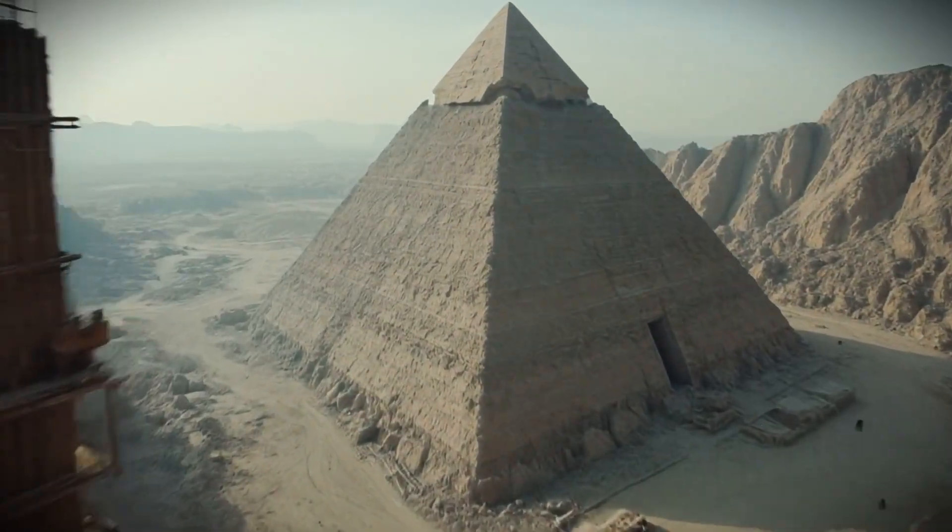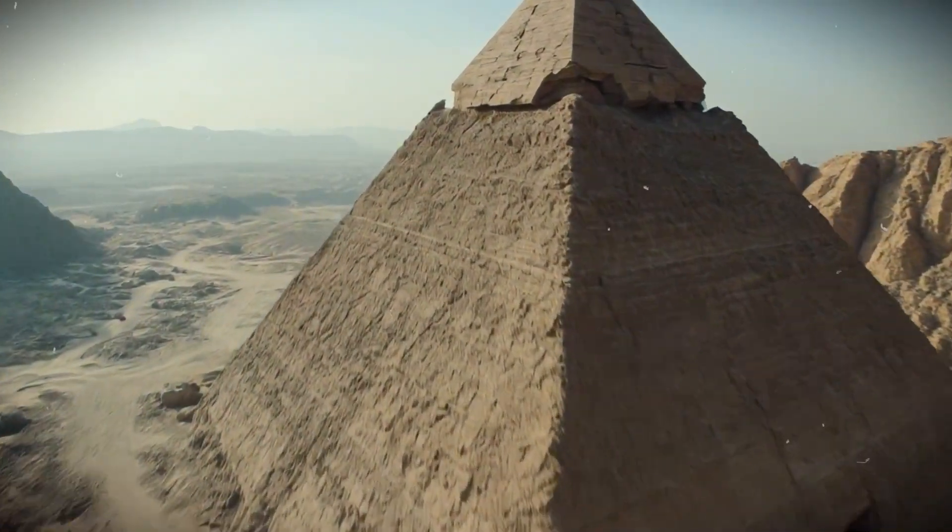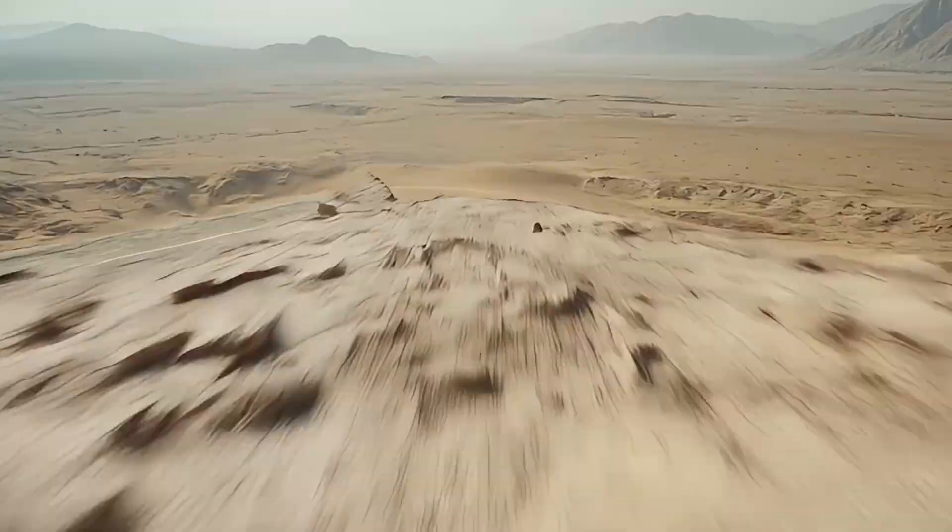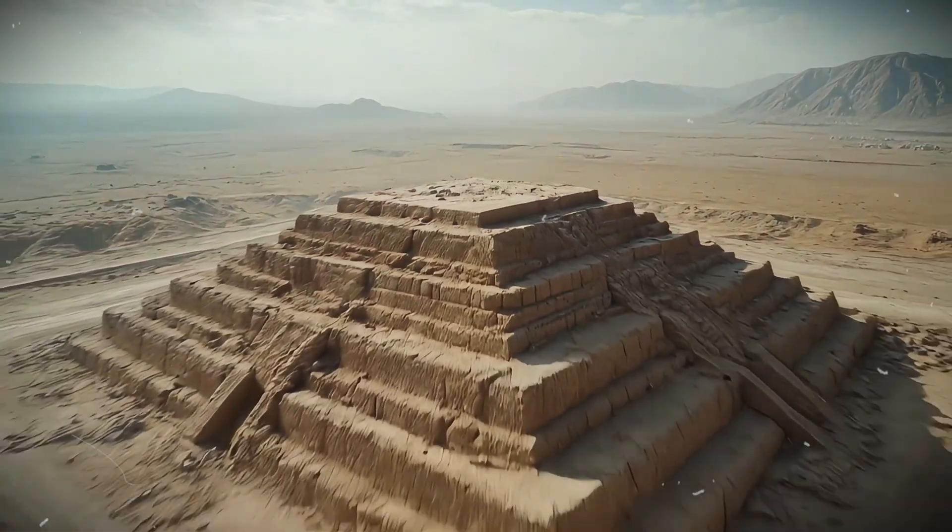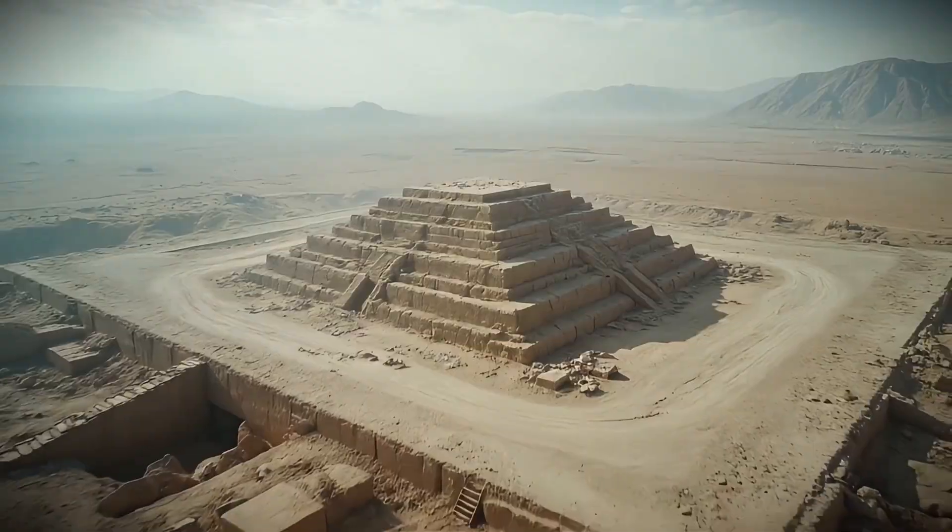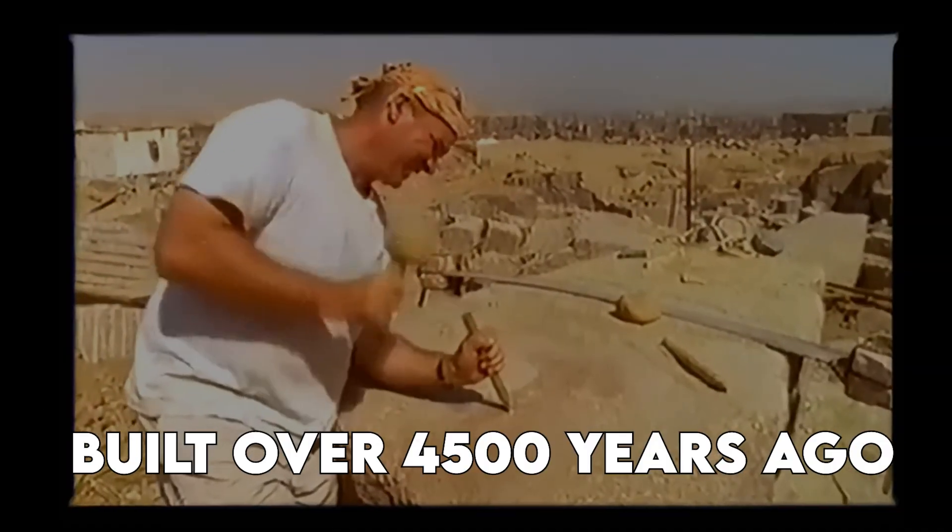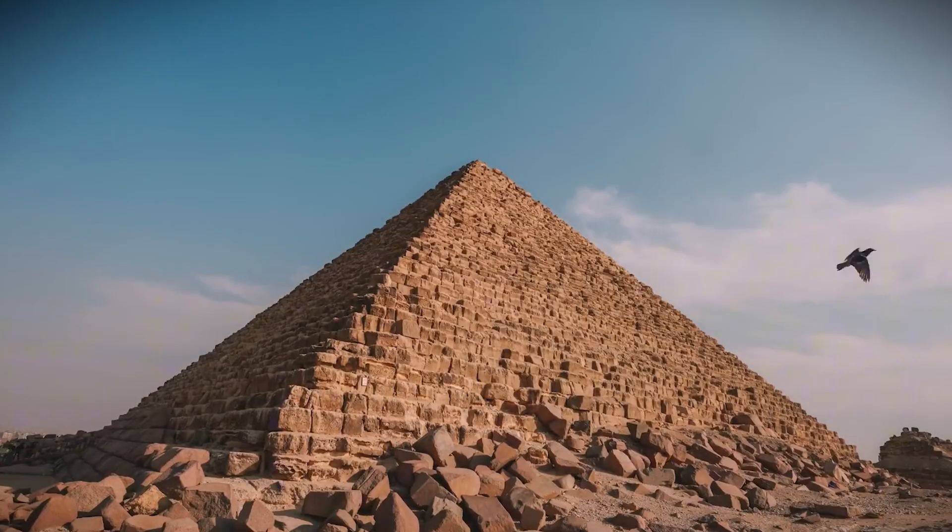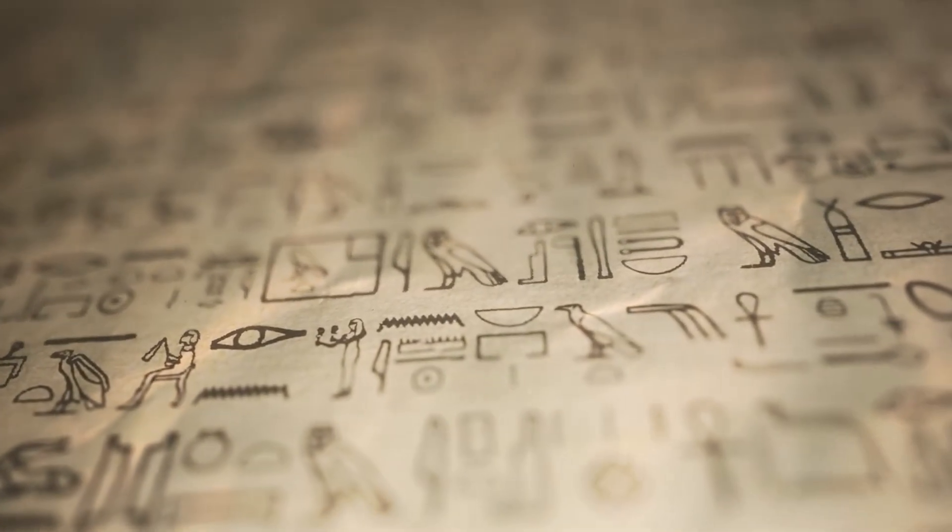The pyramids of Giza are among the most famous and mysterious structures in the world. They stand tall on the edge of the Egyptian desert, just outside of Cairo. Built over 4,500 years ago, they have become symbols of ancient Egypt's power, wealth, and architectural skill.